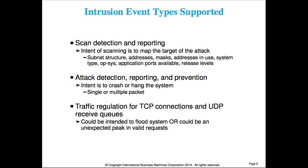Starting with scan: we have scan detection and reporting. The intent of a scan is to map the targeted network — what does your network look like, what servers may be running, what addresses are in use — in preparation for an attack. A scan in itself is not harmful, but it's that gathering of information by a source with intent to attack. We also have attack detection, reporting, and prevention — a wide array of checking. Traffic regulation is provided for TCP connections and UDP receive queues.